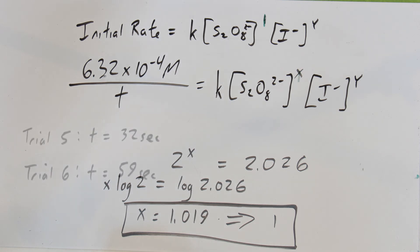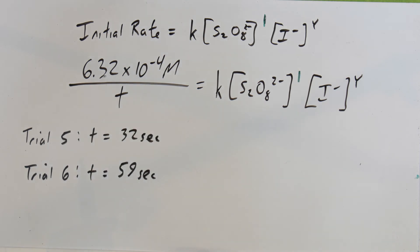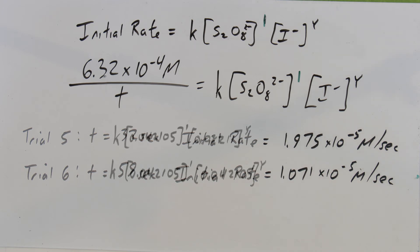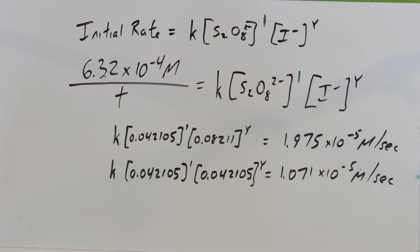We now have one variable out of the way. For the iodide reaction order Y, we hold the persulfate concentration constant so it cancels out — consistent with the previous approach even if we already knew the persulfate order. Here's sample data for trials 5 and 6 and the rates derived from them, calculated exactly the same way as before. We set up the ratio with the concentrations and reaction orders and rate constant.